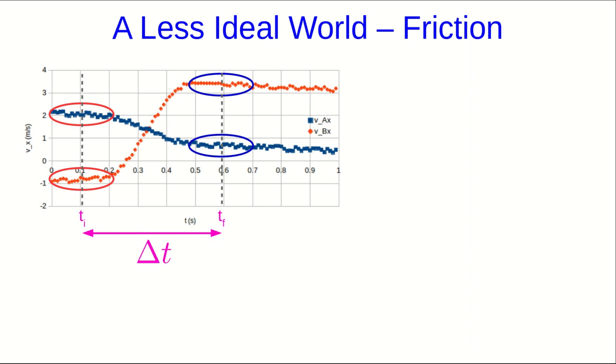Now we know that we're going to take some data before and some data after, use them to get initial and final momentums. And then, even accounting for uncertainty, we expect the momentum to have changed because of friction. An immediate question is, how much data before and after should you use?